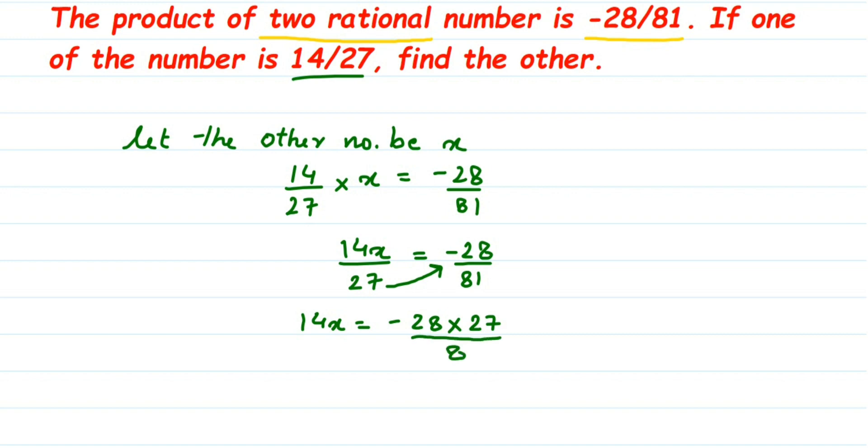Similarly, I want to transpose this 14 to the other side because I want only x there. Now 14 is under multiplication. So when you transpose this to the other side, it goes to division. But in the denominator, I already have 81. So it gets multiplied to the 81.